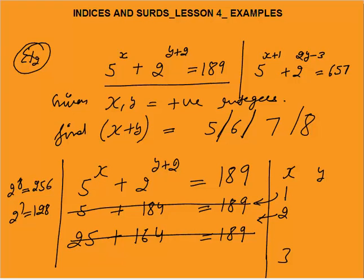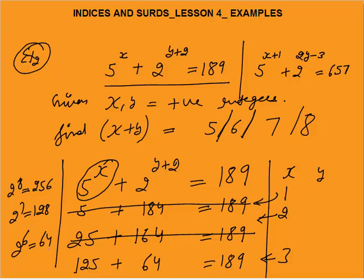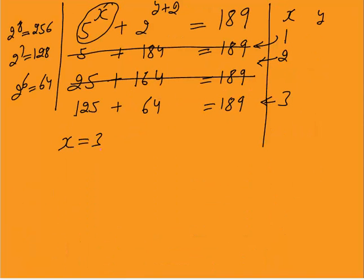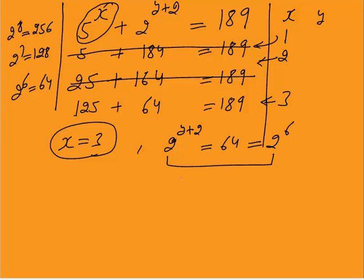Now put x = 3: 5³ = 125. We need 189 - 125 = 64. We know 2^6 = 64. So x = 3 works! Now 2^(y+2) = 64 = 2^6. Since the bases are the same, the powers are equal: y + 2 = 6, so y = 4.